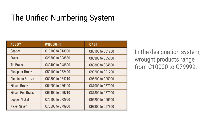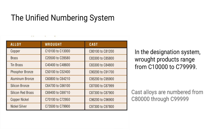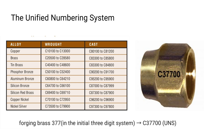In the designation system, wrought products range from C-10,000 to C-79,999, and cast alloys are numbered from C-80,000 through C-99,999. For example, copper alloy number 377, forging brass, in the initial three-digit system became C-37,700 in the Unified Numbering System.